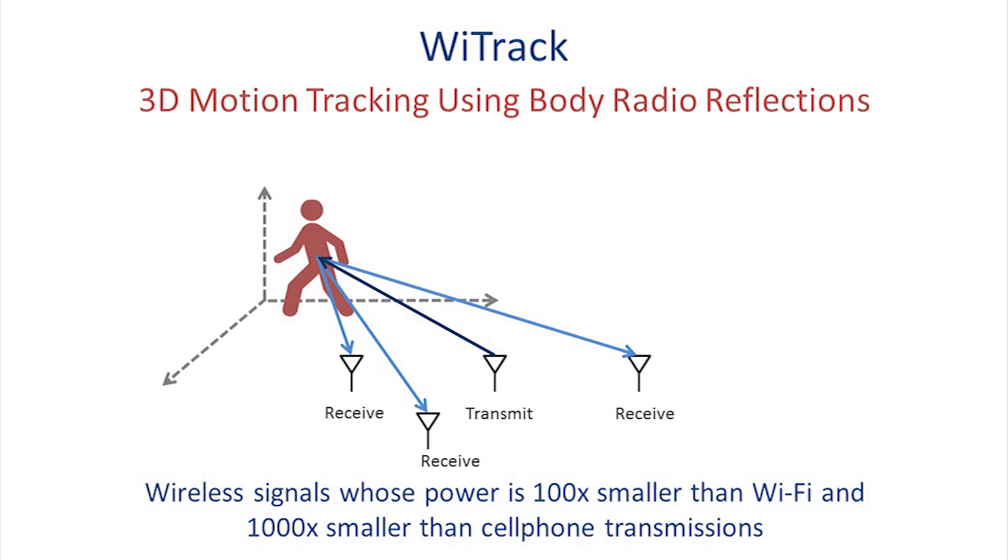The model incorporates new algorithms that remove reflections due to walls and furniture and focus only on the reflections of a human body, even if the person is behind a wall or in a completely different room.